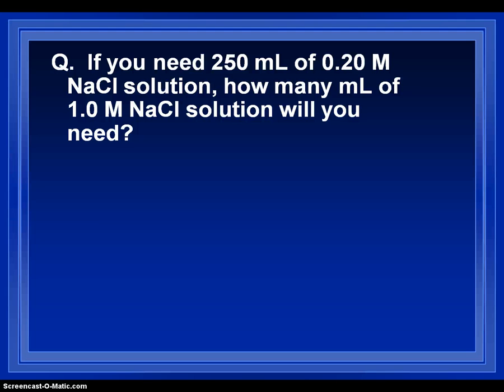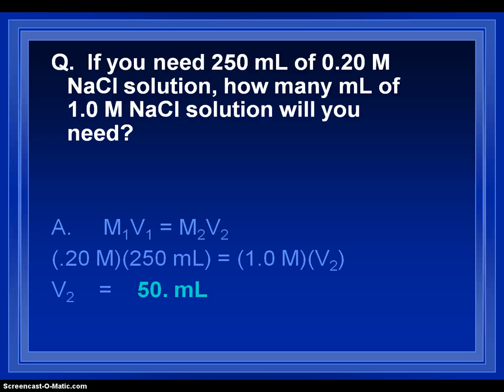All right, let's just do one more, and then I think you'll be ready to complete the dilution calculations on the test. So, let's say you needed 250 milliliters of a 0.2 molar sodium chloride solution. How many milliliters of a 1 molar sodium chloride solution would you need? Again, MV equals MV. So, you have 0.2 times 250 milliliters is equal to 1 times V. So, I would just divide, and I would get 50 milliliters. So, a very simple calculation, and hopefully now you can complete the making dilutions and solutions worksheet.